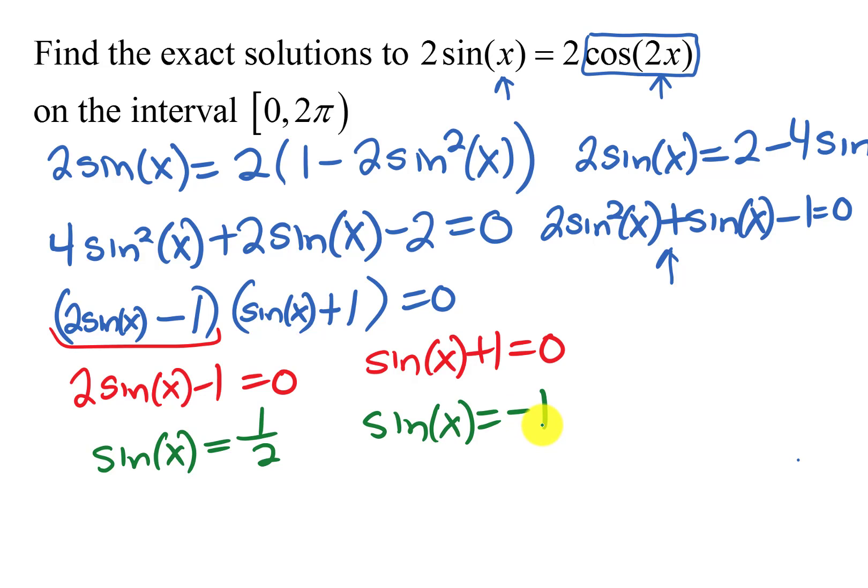So all my solutions on this interval from 0 to 2 pi I'm first going to ask myself when is the sine 1 half. So I'm thinking of the unit circle and sine is positive so I'm going to have solutions in quadrant 1 and quadrant 2. And I want the angles where the sine value of half is smaller than square root 3 over 2. So that's going to be at pi 6 and at 5 pi 6. So two of my solutions, x equals pi 6 and 5 pi 6.